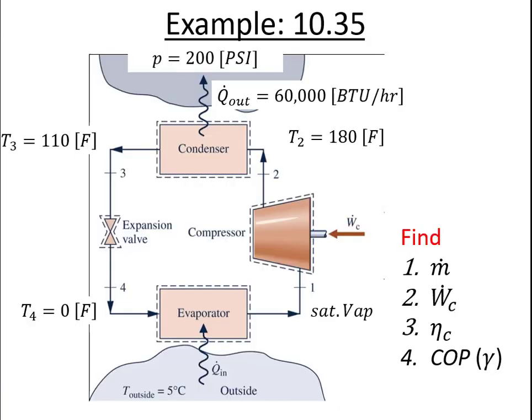So in this problem, we have a heat pump cycle in imperial units. So we always have to be a little bit careful when we're doing imperial units because it might change some of how we do the problem. We're given some state information and we're asked to find the mass flow rate, the compressor power, the coefficient of performance, and the isentropic efficiency of the compressor.